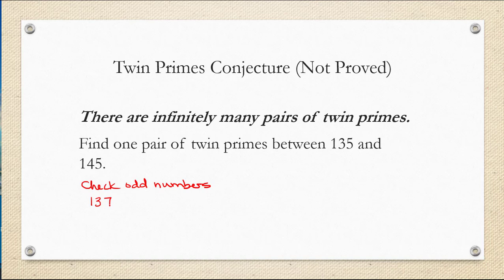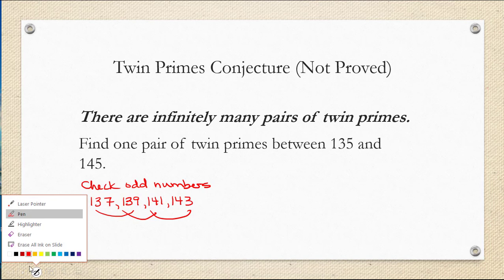We would need to check 137, 139, 141, and 143. Any pair of these could be twin primes, but all we have to do is confirm whether they're prime or not to know if we have a pair of twin primes.